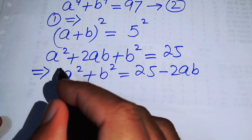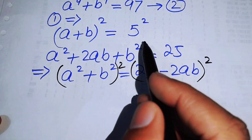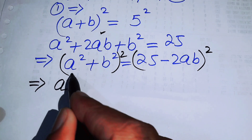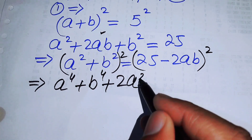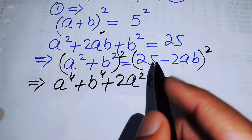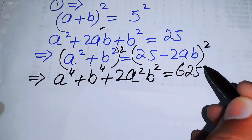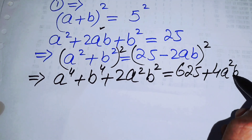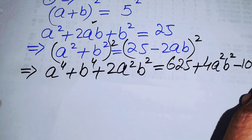We square both sides again using the same formula and get a⁴ + b⁴ + 2a²b² equals (25 minus 2ab)², which expands to 625 minus 100ab plus 4a²b².